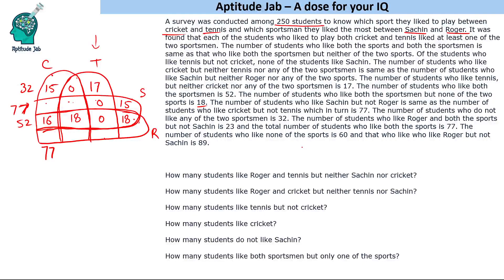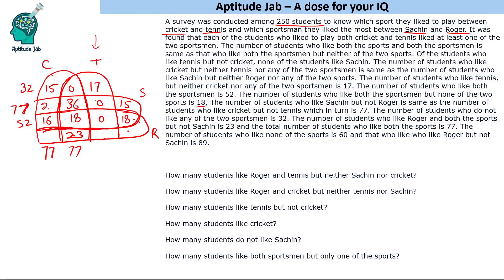The number of students who like Roger and both sports but not Sachin is 23. The total number of students who like both sports is 77. So filling in: 16 plus 23 gives regions summing to 77. Working through the arithmetic — 41 plus 36 equals 77, and 15 plus 36 equals 51, so the remaining piece is 26. The Sachin-not-Roger side gives 77, and with 57 accounted for, the remaining region is 20.